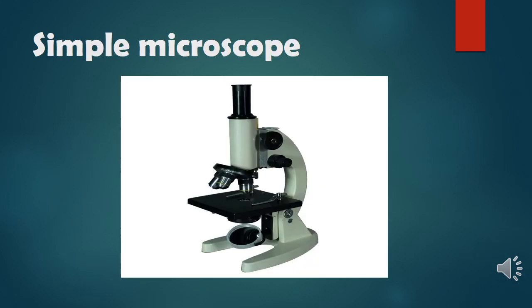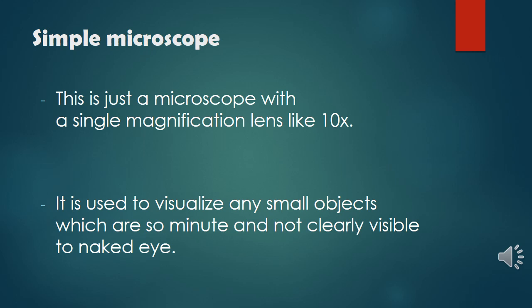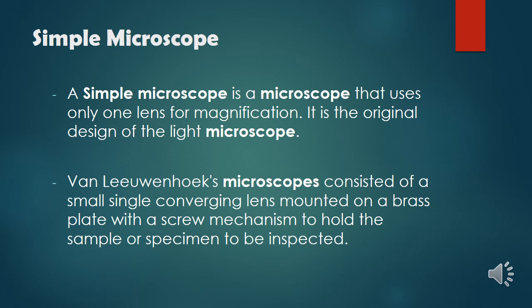The simple microscope is just a microscope with a single magnification lens, like 10 times. It is used to visualize any small objects which are so minute and not clearly visible to the naked eye. A simple microscope uses only one lens for magnification — it is the original design of the light microscope. Van Leeuwenhoek's microscopes consisted of a small single converging lens mounted on a brass plate with a screw mechanism to hold a sample or specimen to be inspected.